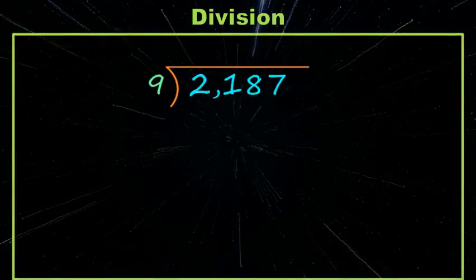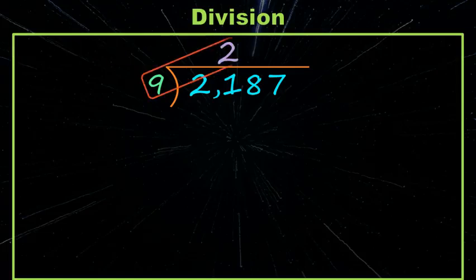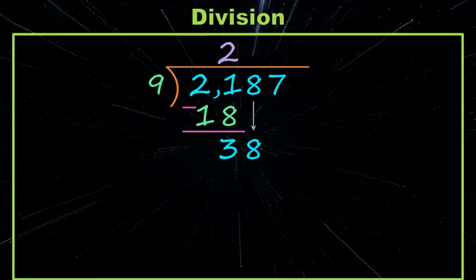Now we're all set up and we ask ourselves does nine go into two? Well not with any numbers we know. Does nine go into 21? Yes, yes it does. And it goes twice and nine times two is 18. That goes underneath then we subtract. We're left with three we bring down the eight. With me? Great.